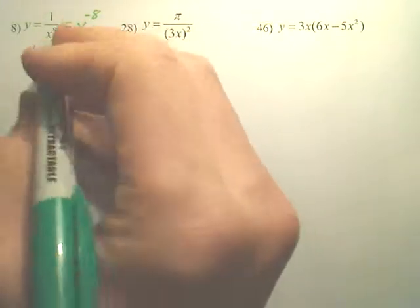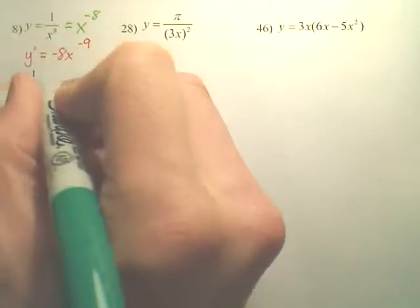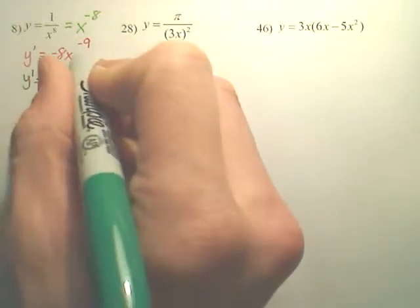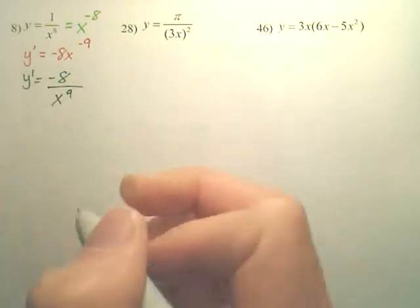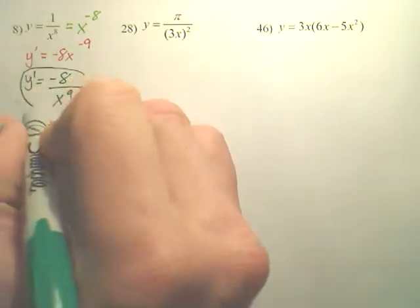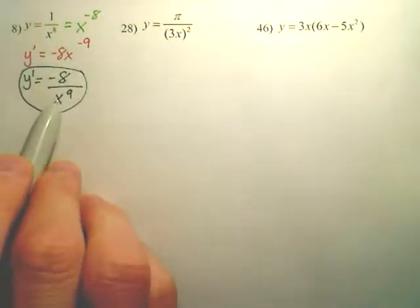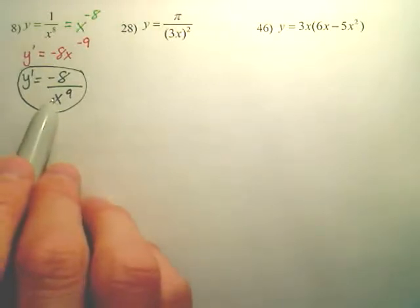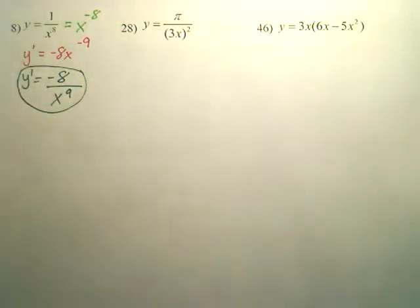And we don't like our answers to have negative powers. So this is going to be negative 8, negative powers drop back to the bottom, it's going to be 9th power. That is the derivative. Meaning, if you plug in any number to this, it will tell you the slope at that point of the previous graph.